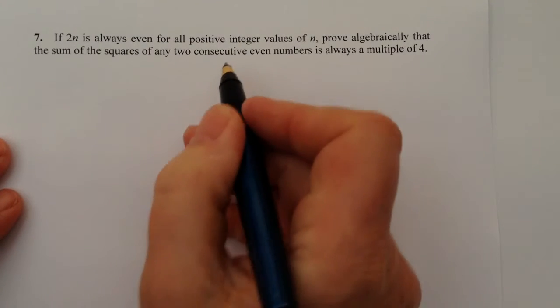Okay hi, so this is question 7 on the GCSE mathematics proof practice questions that you'll be able to download from the link below in the description. What it says is if 2n is always even for all positive integers of n, prove algebraically that the sum of the squares of any two consecutive even numbers is always a multiple of four.